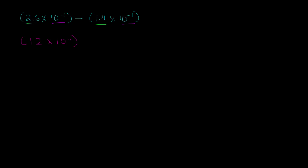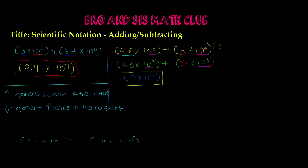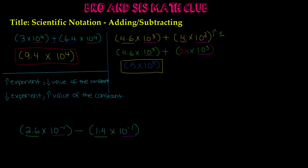If the exponents had been different, you follow the same rule: to increase the value of the exponent, decrease the value of the constant; to decrease the value of the exponent, increase the value of the constant. This rule applies to both addition and subtraction. Thanks for watching, and we'll see you guys next time. Bye!